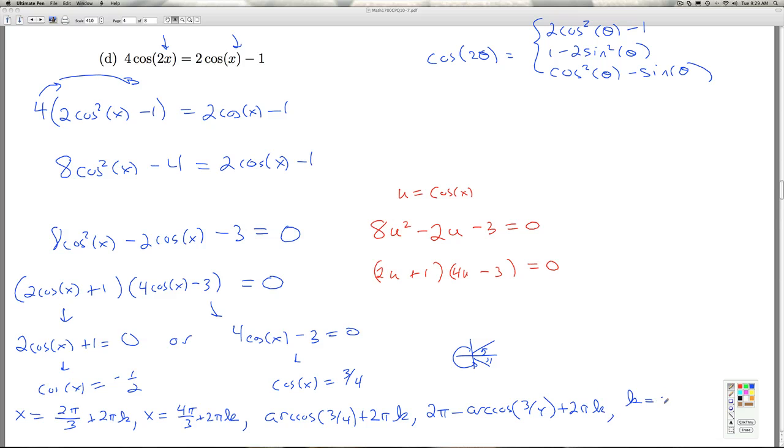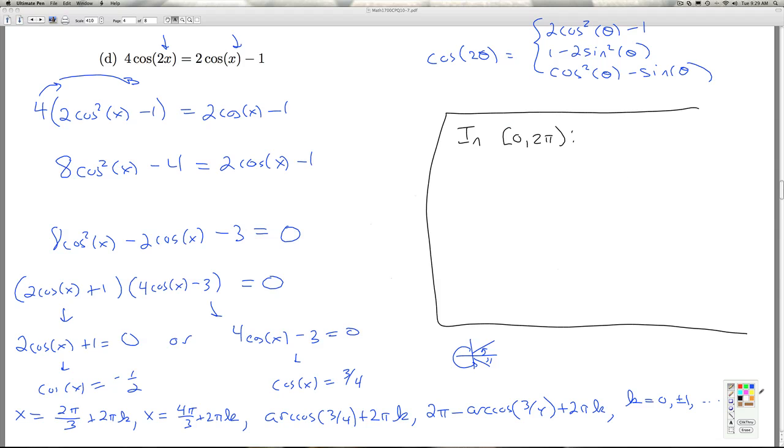Or once again, k is our friendly integer. And so on. So that's the family of solutions. Now we have to decide which ones of those lie between 0 and 2 pi. So what I'm going to do is just get rid of the algebra scratch work here. And we'll just tuck the answer in up here. So in 0 to 2 pi, what am I going to get here?